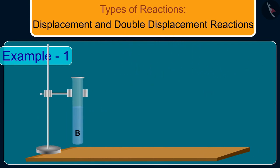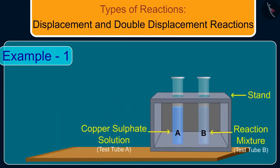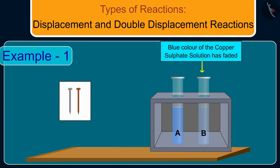Now we will compare the intensity of the blue color of copper sulfate solutions in test tubes A and B, and the color of iron nails dipped in the copper sulfate solution with the one kept aside. We can observe that the blue color of the copper sulfate solution has faded and the iron nail had turned into a brownish color.